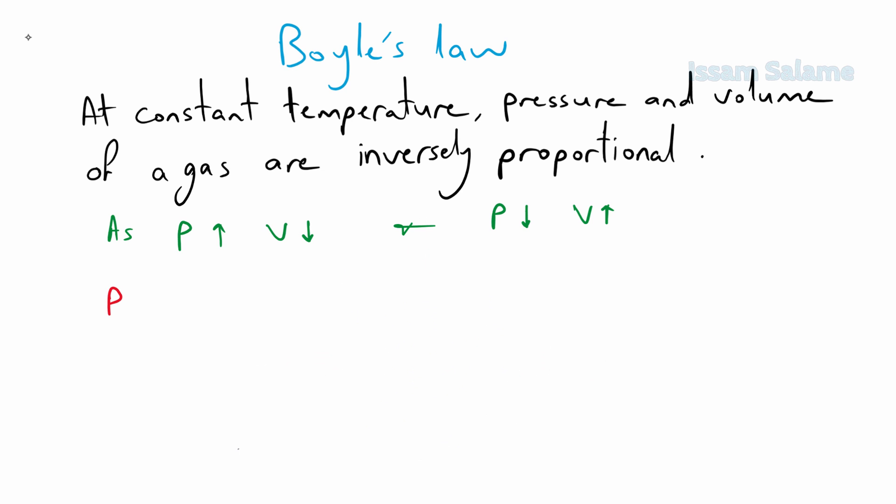According to Boyle's Law, the product of pressure and volume is almost constant, which means that the product of initial pressure and initial volume is equal to the product of final pressure and final volume. Or P1V1 is equal to P2V2.